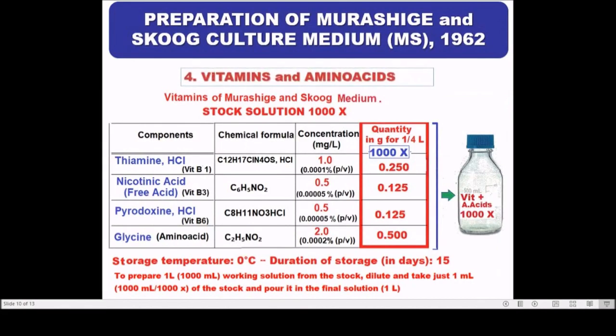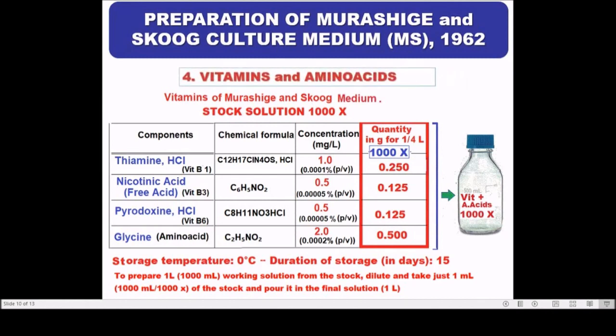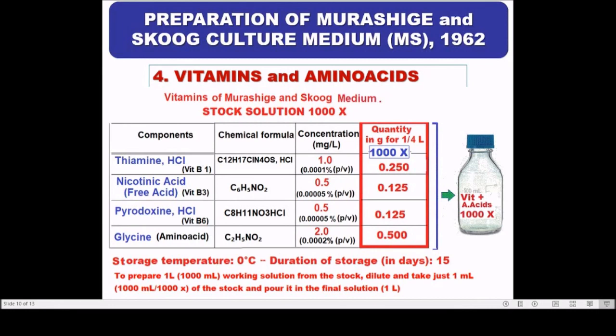As step four, we need to add vitamins and amino acids. Plant cell cultures need to be supplemented with certain vitamins that act as coenzymes for healthy growth of tissue cultures. The most widely used vitamins are those of the B group, including thiamine (vitamin B1), nicotinic acid (vitamin B3), and pyridoxine (vitamin B6).